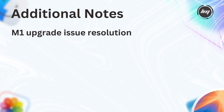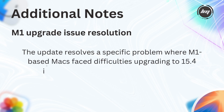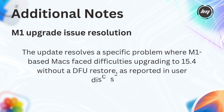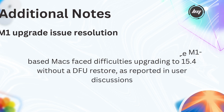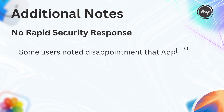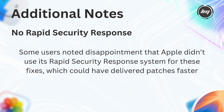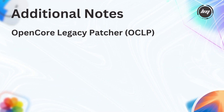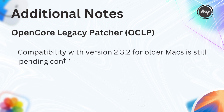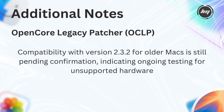Some additional notes: the update resolves a specific problem where M1-based Macs faced difficulties upgrading to 15.4 without a DFU restore. Some users noted disappointment that Apple didn't use its Rapid Security Response system for these fixes, which could have delivered patches faster. OpenCore Legacy Patcher (OCLP) compatibility with version 2.3.2 for older Macs is still pending confirmation, indicating ongoing testing for unsupported hardware.